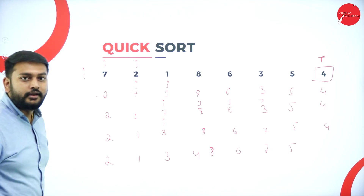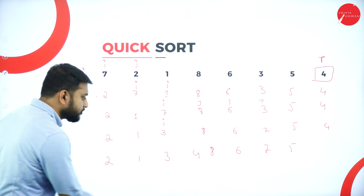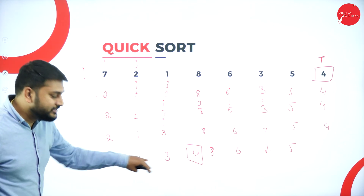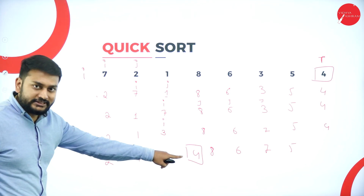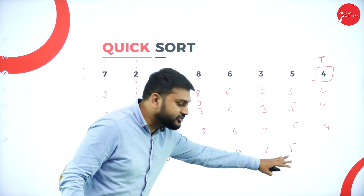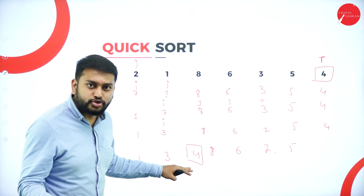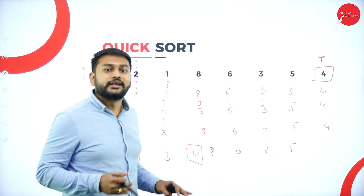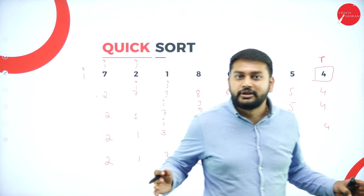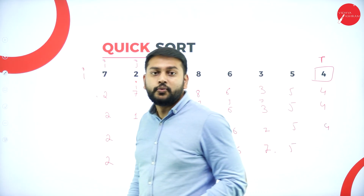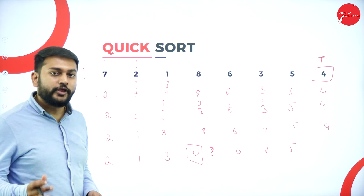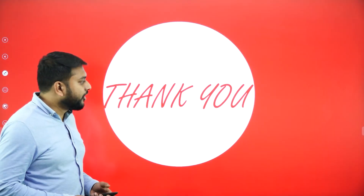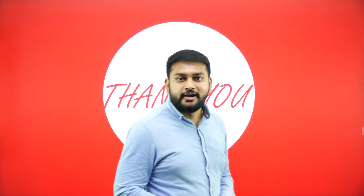Now check the condition — four is the pivot. Whatever elements are on the left side, are they less than the pivot? Yes, it is true. Whatever elements are on the right side, are they greater than the pivot? Yes, it is true. Like this, it will keep recursively sorting until the array is completely sorted. That's what you need to remember with respect to quick sort. I've come to the end of the session — take care, bye bye.